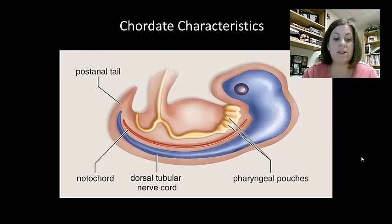Some chordates display all four of these characteristics their entire life. However, in others, these structures can be modified and changed as they develop. As humans, we no longer have pharyngeal pouches or a post-anal tail. These structures have been modified. The pouches become our auditory tubes, the tubes in our ears. They also become our tonsils, thymus glands, and parathyroid glands. The post-anal tail for us becomes our tailbone.